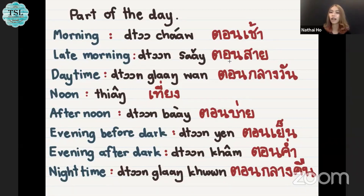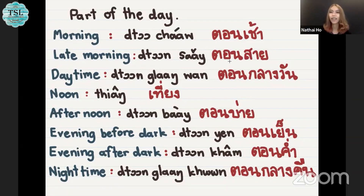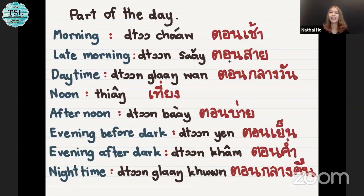Evening before dark, we say ตอนเย็น, ตอนเย็น. And evening after dark, we say ตอนค่ำ, ตอนค่ำ. And night time, we say ตอนกลางคืน, ตอนกลางคืน.